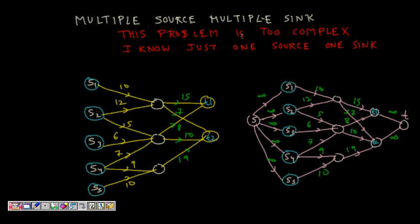Next you see again next question is that multiple source multiple sink. Now you are saying that okay what is he giving, this problem is too complex, I know just one source and one sink problem you told in the class, now how are you giving these questions, all these arbitrary questions you are giving.